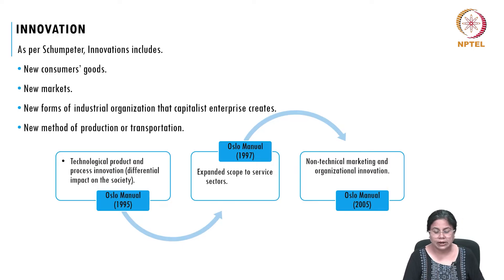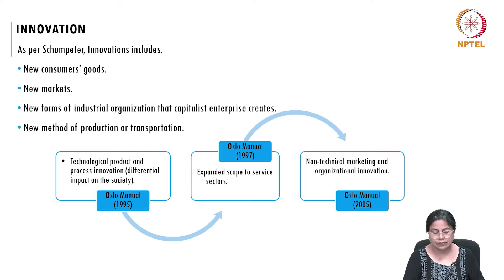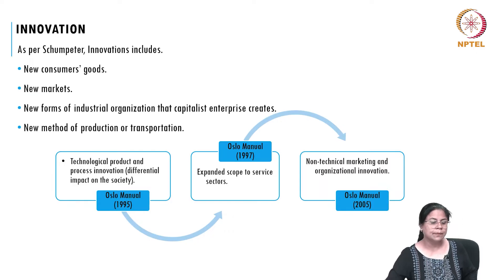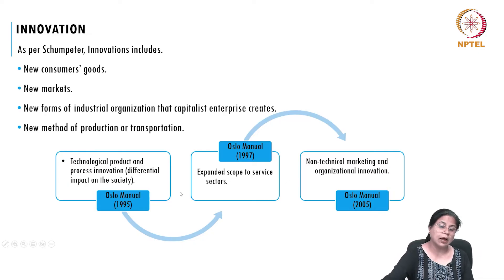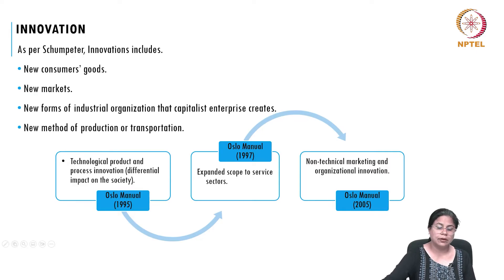The Oslo Manual is an international reference guide for collecting and using data on innovation. In its fourth edition, the manual has been updated to take into account a broader range of innovation-related phenomena as well as experience gained from recent rounds of surveys among different OECD countries, partner economies, and organizations. We will look at this manual and understand how the concept of innovation has evolved over the years.